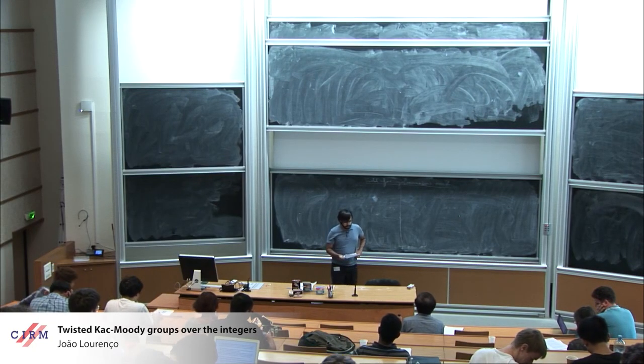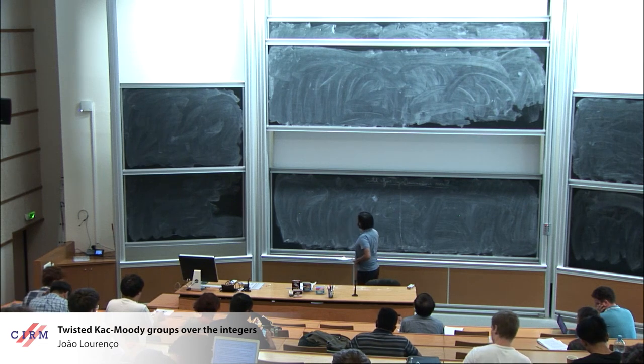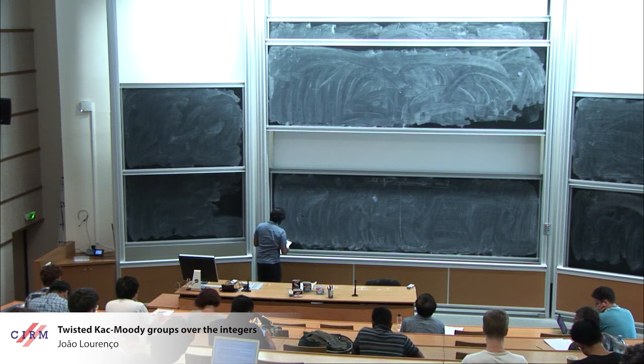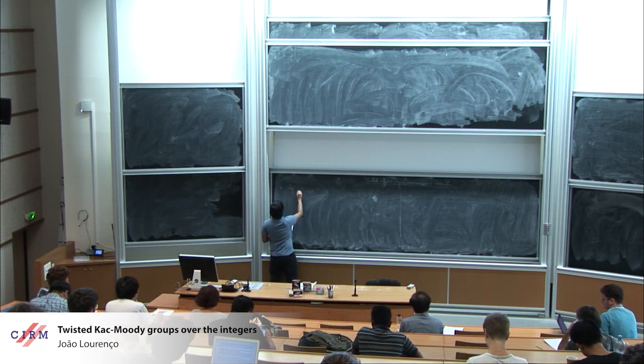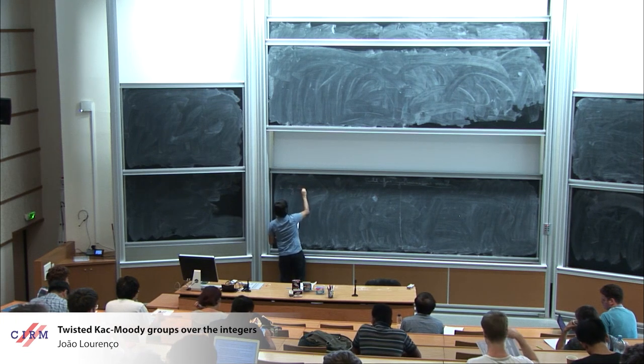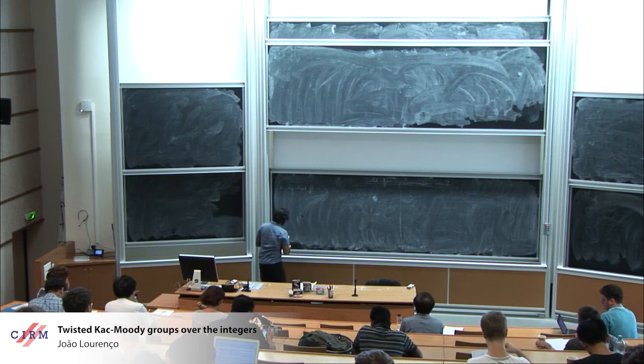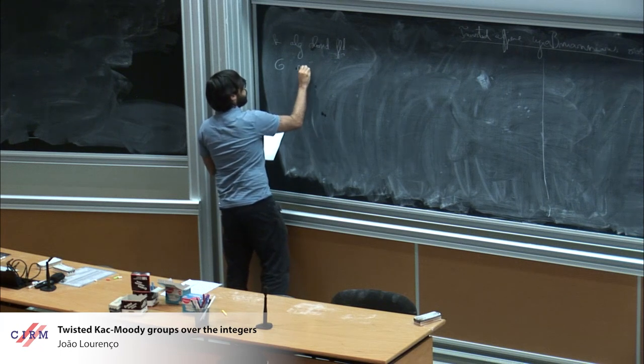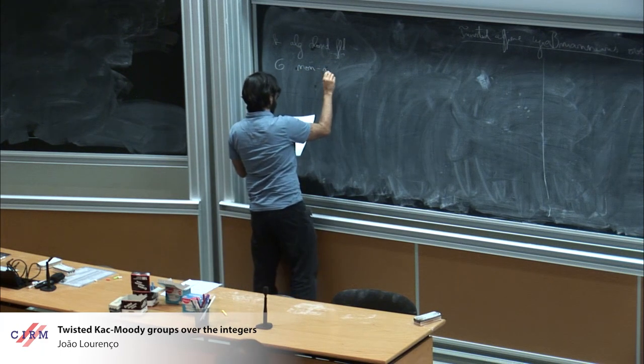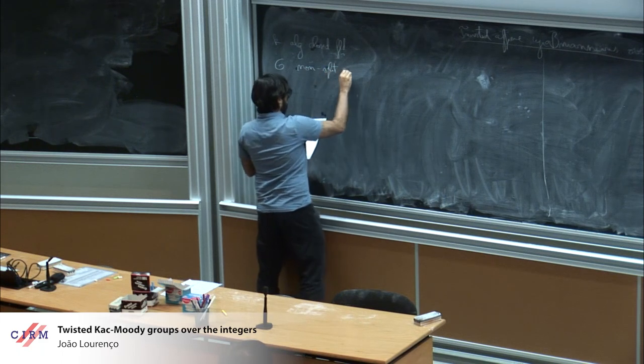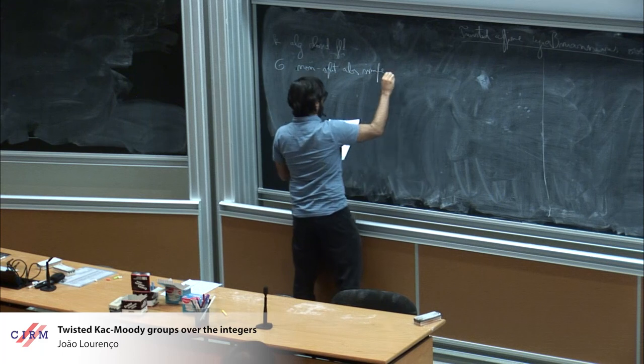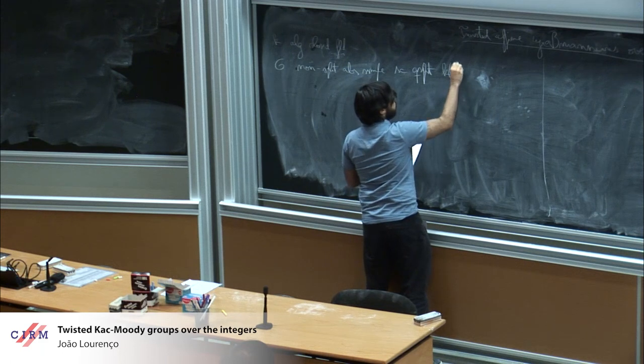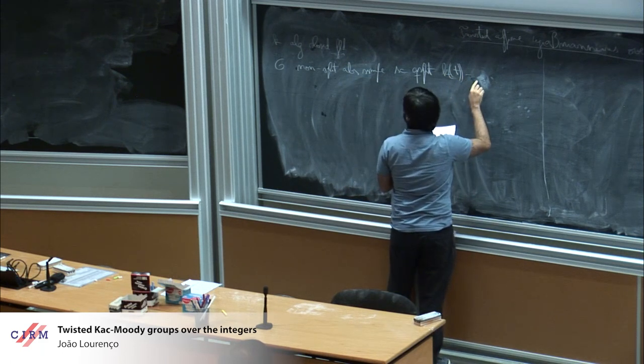Thanks a lot for the invitation to speak here. I'd like to start by setting up some notation. Let k be an algebraically closed field, although I'll soon drop it. G will be a non-split, absolutely simple, simply connected, quasi-split group over Laurent series field with coefficients in k.